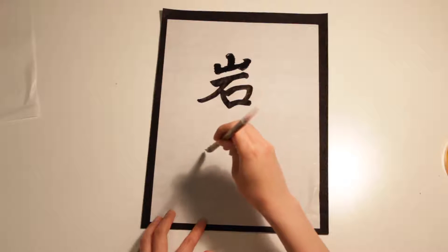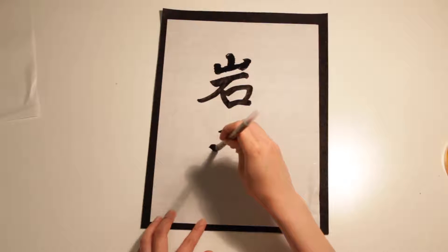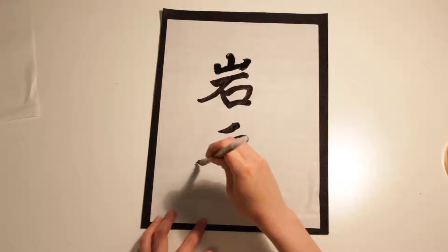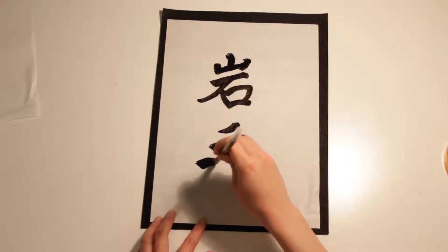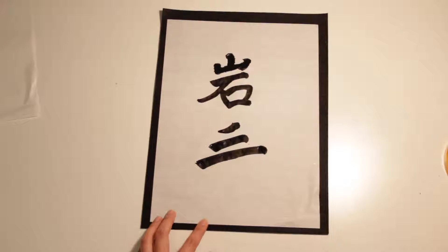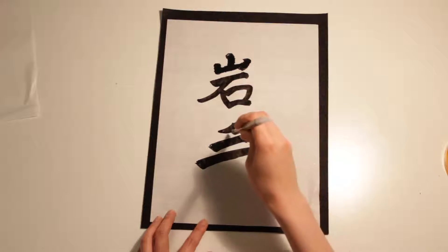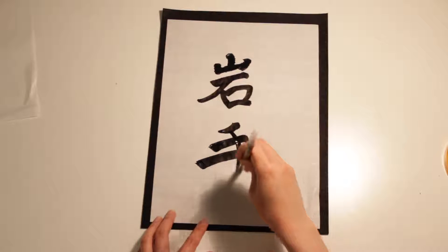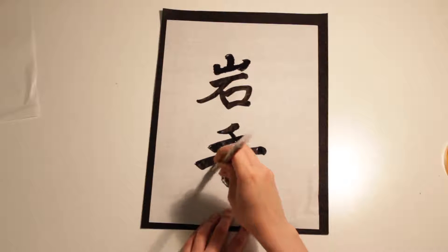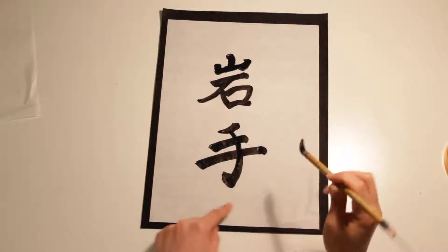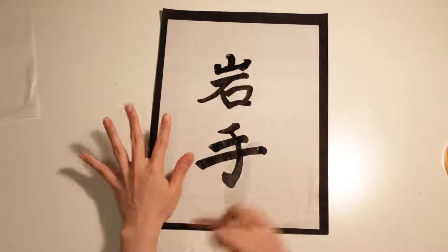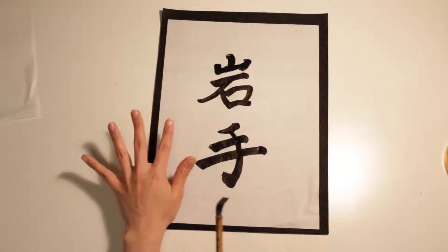Te. Te means hand. This character looks like a hand, right? It's like a hand — this one.